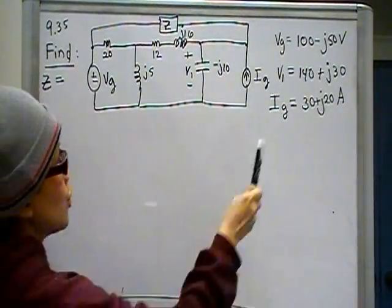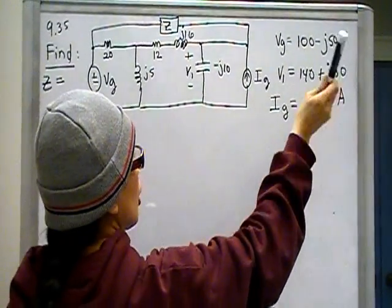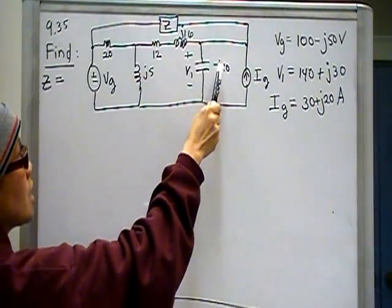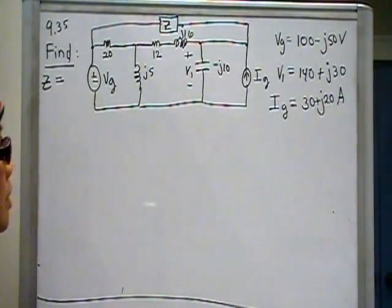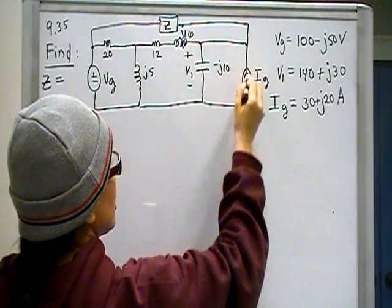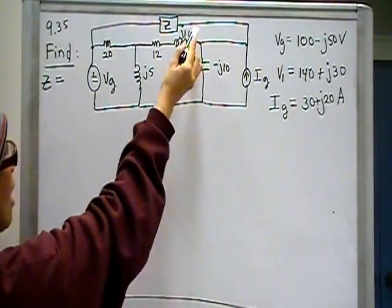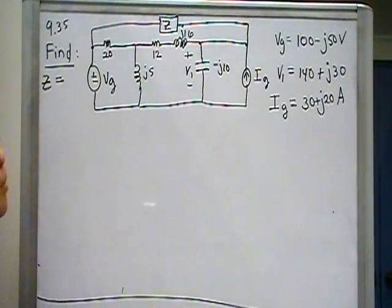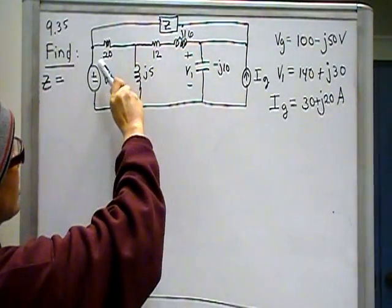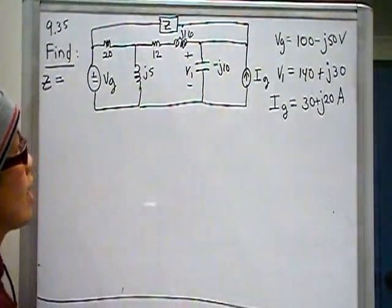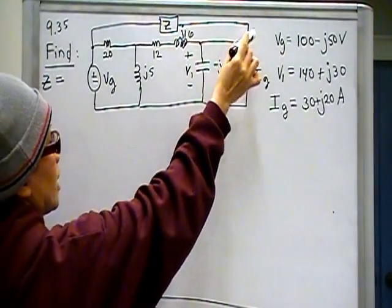j16 inductor there, V1 the voltage drop across the capacitor which has value 140 plus j30, an impedance of minus j10, an independent current source here which has 30 plus j20 amps. We're looking for that impedance, the one that connects VG and I sub G, this node right here.